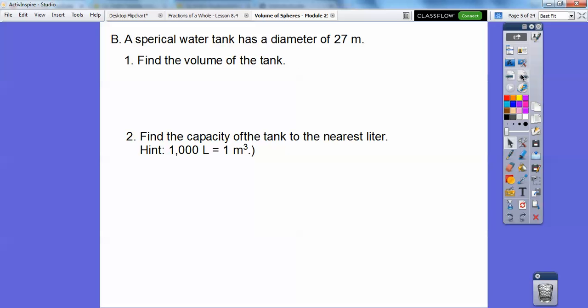Okay, so a spherical water tank has a diameter of 27, so what's the radius? The radius is half of that, so 13 and a half, I think. So find the volume, and then we'll answer number 2 after we find the volume.